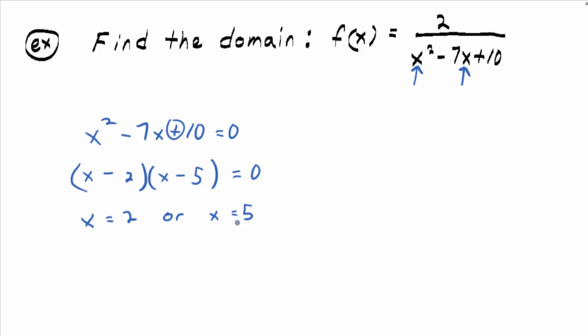Sorry, I went so fast there, but I wanted to get you out of here. Okay, but wait. So that means the domain would be the set of all x except those ones, right?